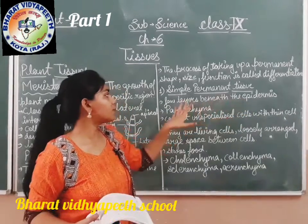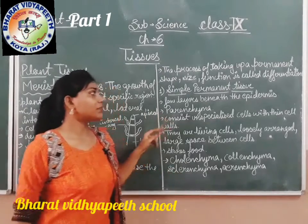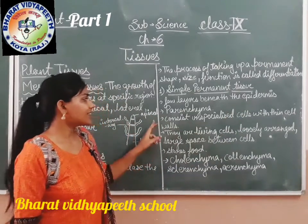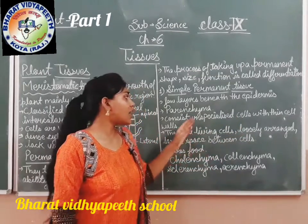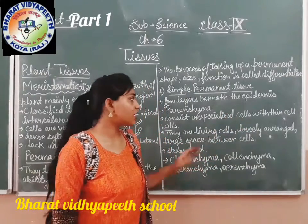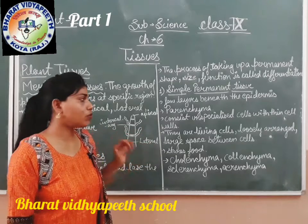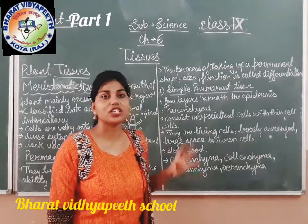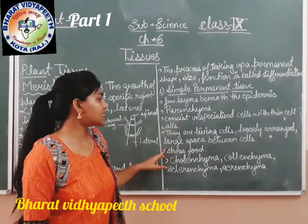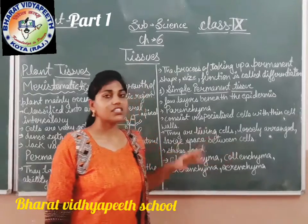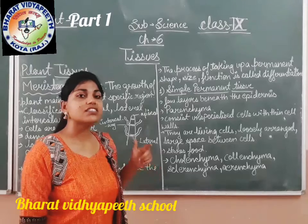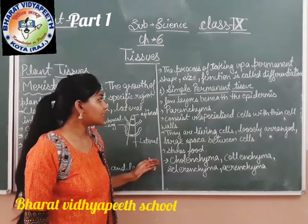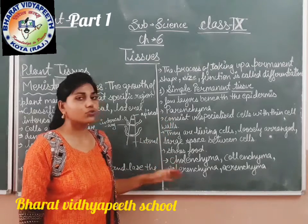Under the epidermis there are layers which form permanent tissue. Parenchyma is present lower than the epidermis tissue. Parenchyma is the most common permanent tissue found in plants. It consists of unspecialized cells with a thin cell wall, and the cells are loosely arranged with large spaces between them. These large spaces between the cells are known as intercellular spaces. Parenchyma also stores food for the further development of the plant.